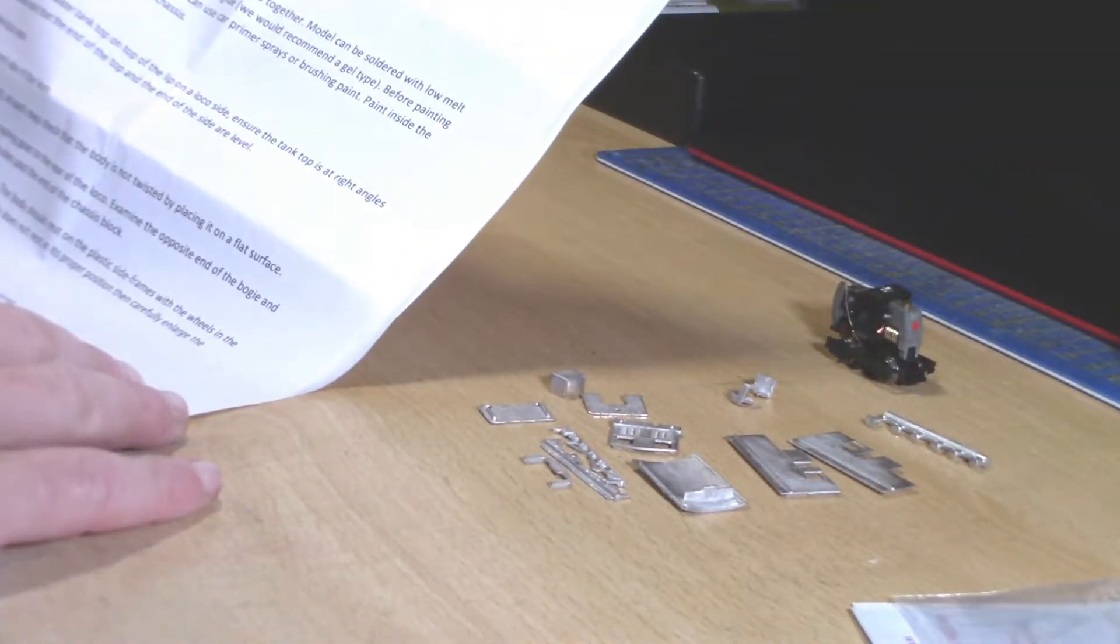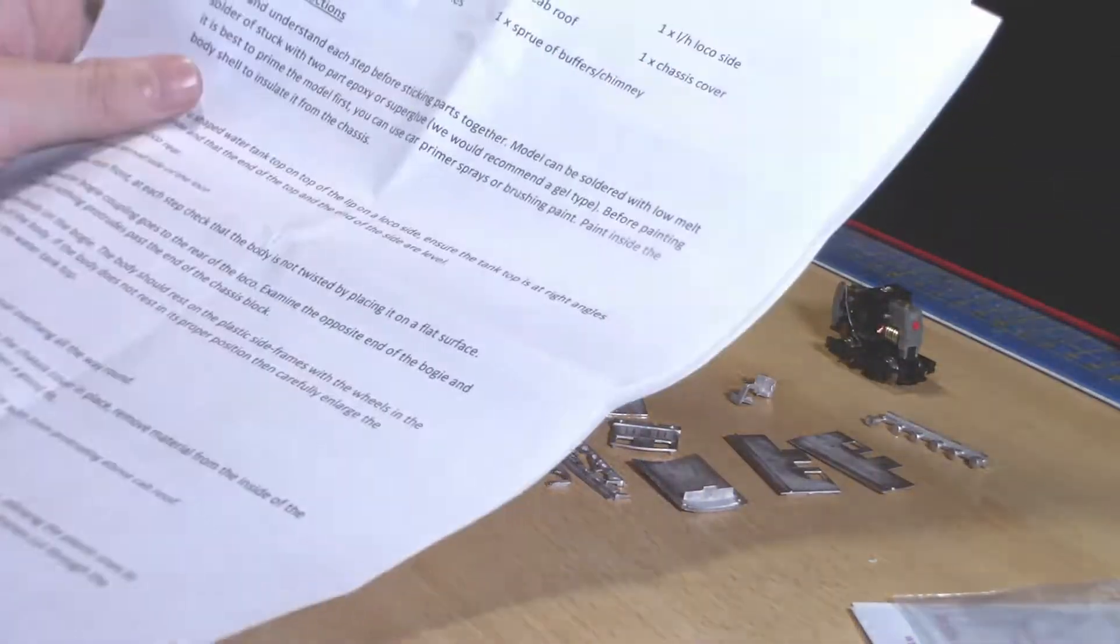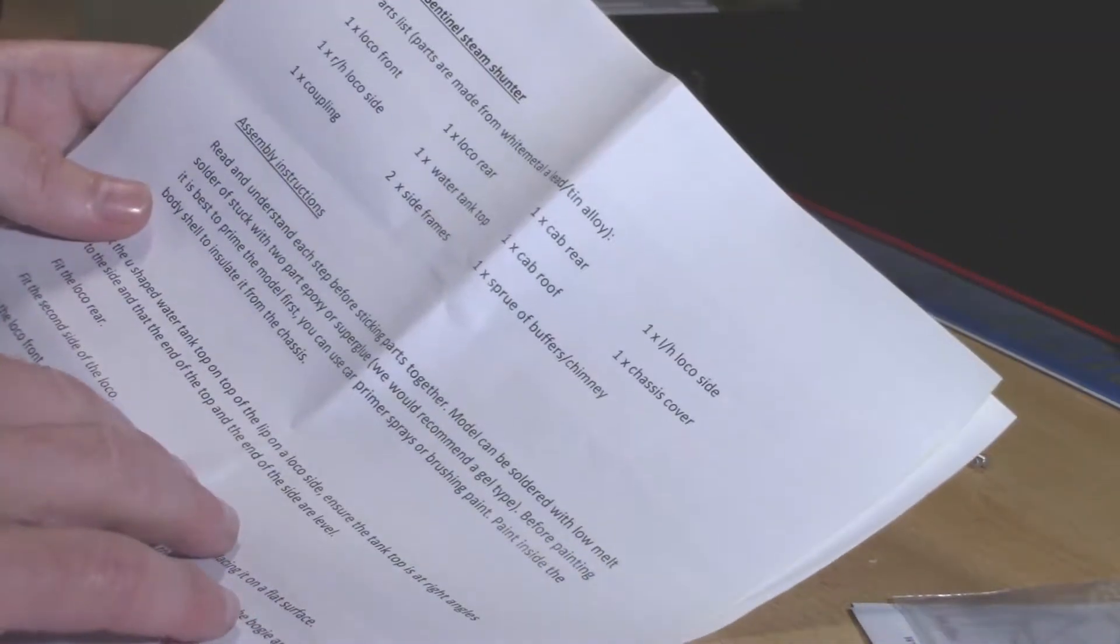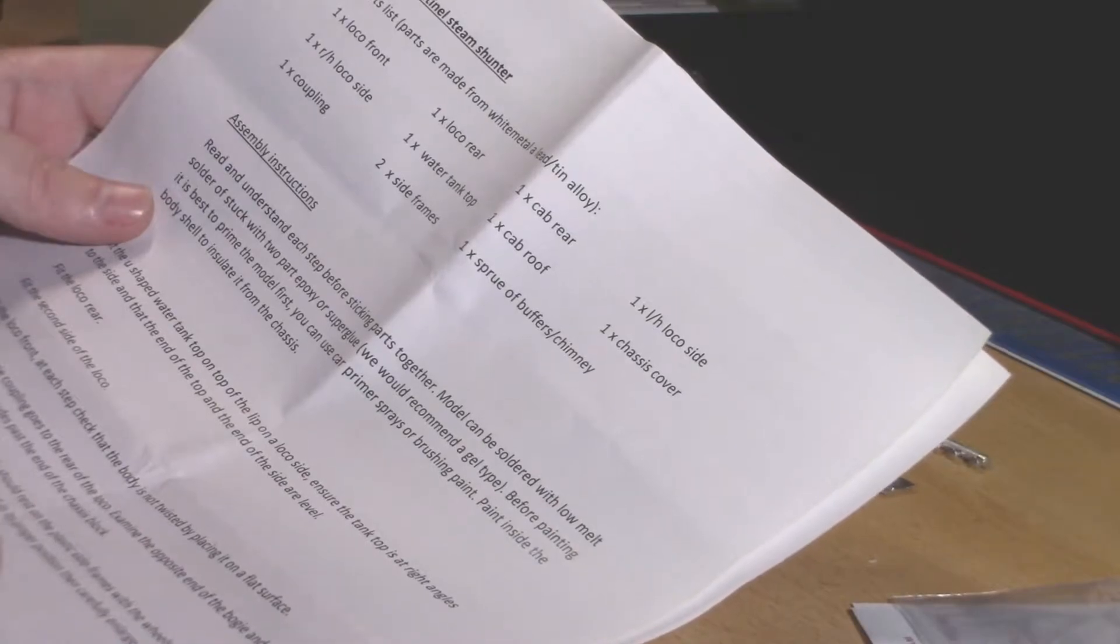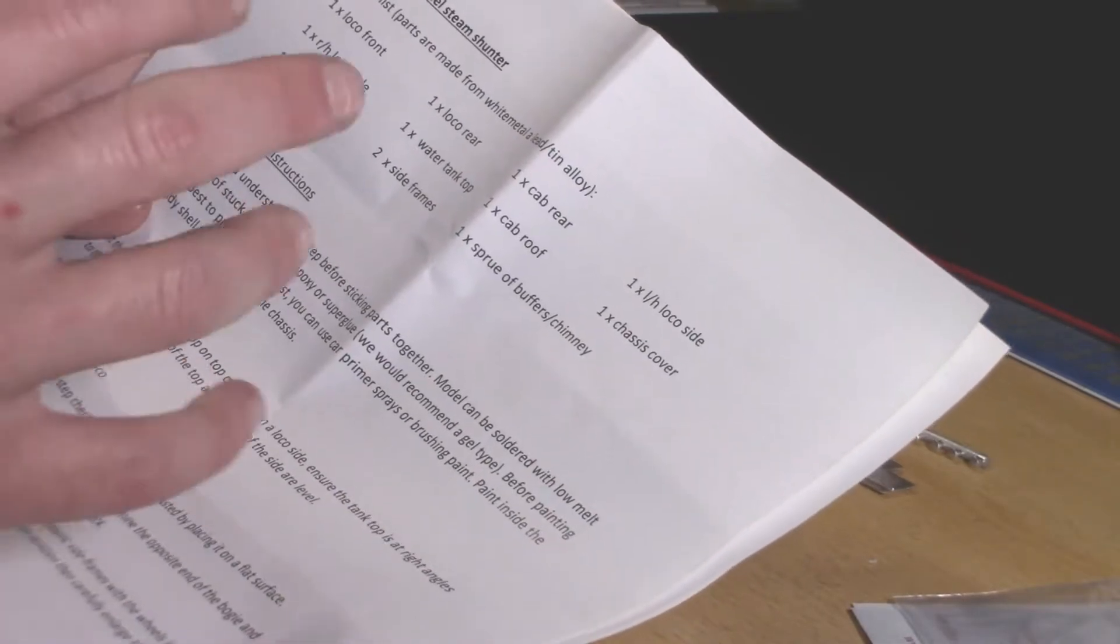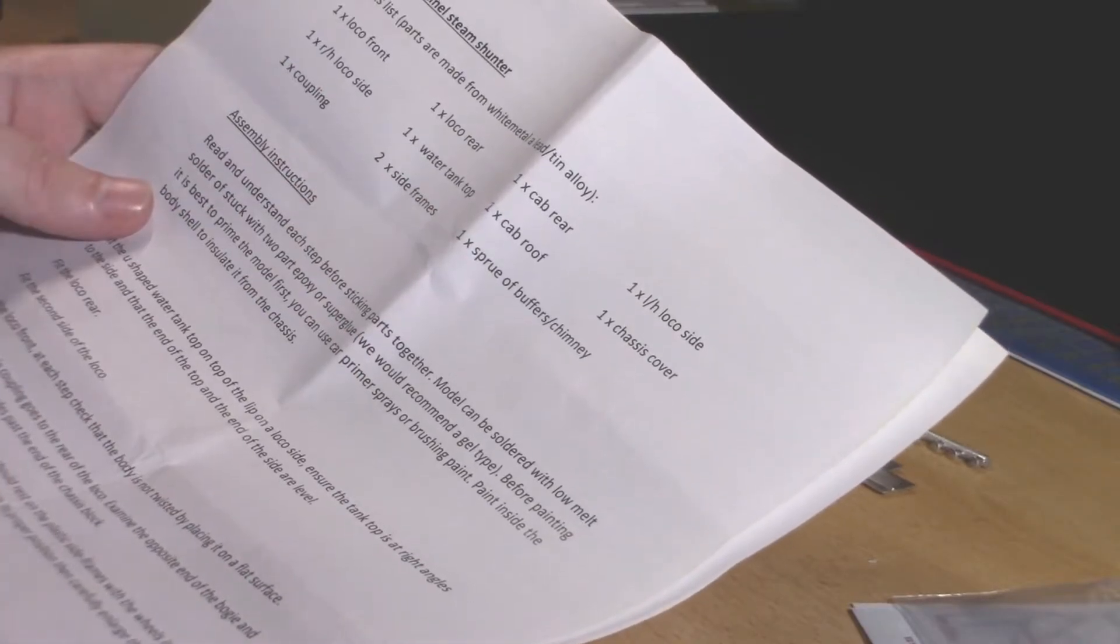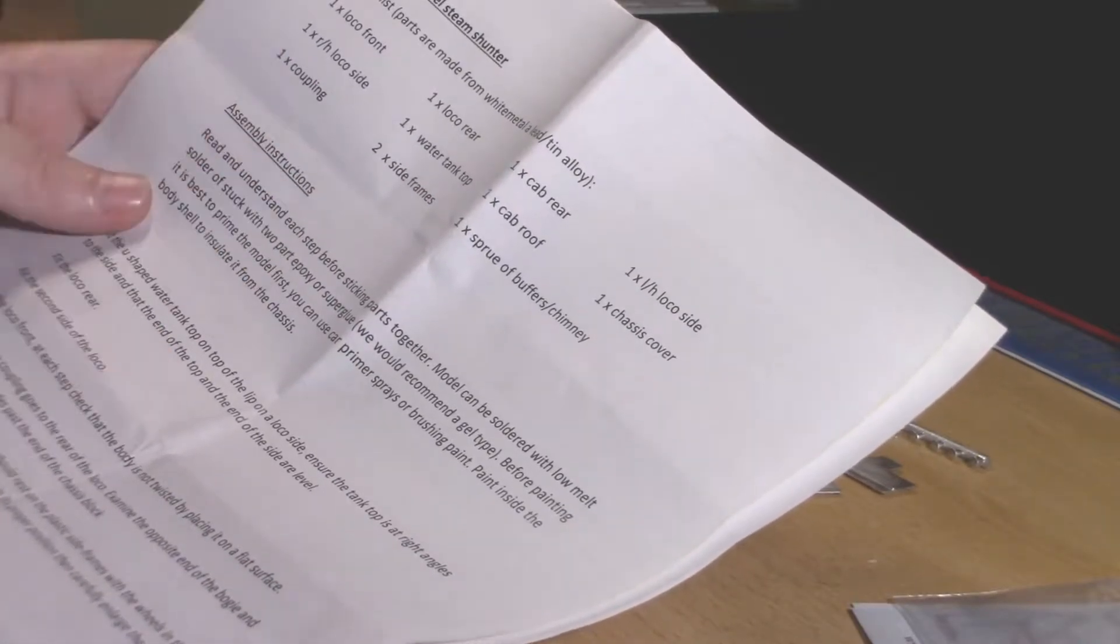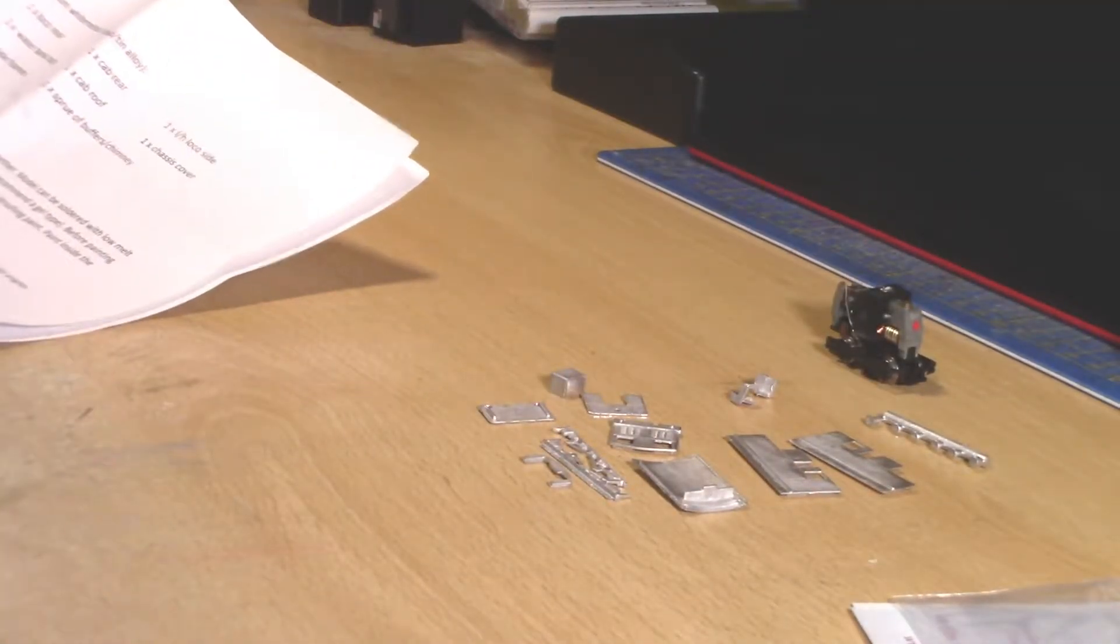So you've only got a few bits and pieces. This is the instructions and it's got the loco front, right side, left side, coupling, loco rear, water tank top, two side frames, cab rear, cab roof, a sprue of buffers and chimney and a safety cover. So basically that many pieces really.